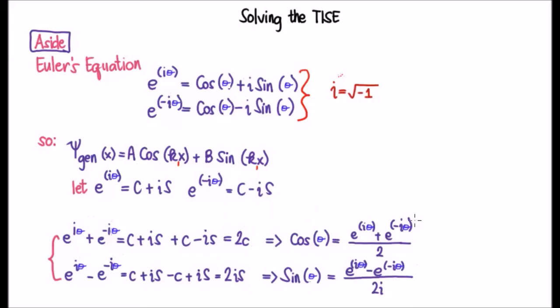We can rearrange for cosine theta, which is e to the i theta plus e to the minus i theta over 2.